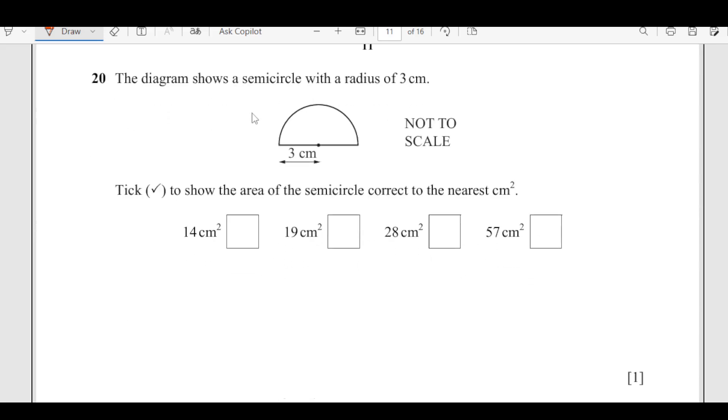Number 20, the diagram shows a semi circle with radius 3 centimeters. Tick to show the area of the semi circle. Area of circle is pi r squared, and we have a semi circle. Area of semi circle is going to be half of that. So half times pi times r is 3 squared. Substitute the values in the calculator, you will get it as 14.